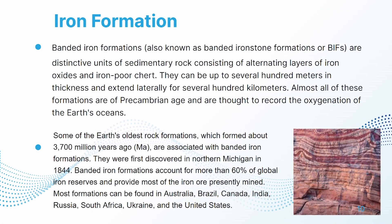Now let's discuss another non-clastic sedimentary rock: banded iron formations, also known as banded ironstone formations or BIFs. These are distinctive units of sedimentary rock consisting of alternating layers of iron oxides and iron-poor chert. They can be up to several hundred meters in thickness and extend laterally for several hundred kilometers. Almost all of these formations are of Precambrian age and are thought to record the oxygenation of the Earth's oceans. Some of the Earth's oldest rock formations, which formed about 3,700 million years ago, are associated with banded iron formations.